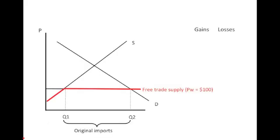Let's start out with a basic supply and demand curve for an import-competing industry. We have the red line, which is the free trade supply price. We're looking at a small country case — the world will supply as much of this product as this importing country would want at $100. So the world price is $100. Q2 is demanded, Q1 is supplied domestically, and the difference, of course, is imported.